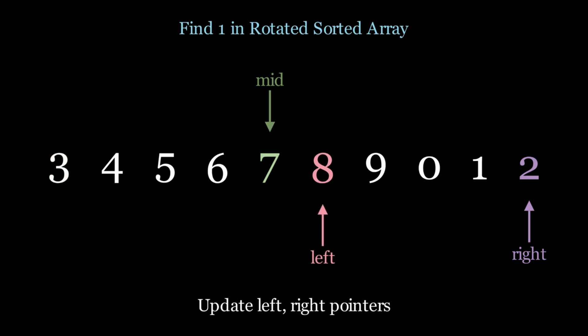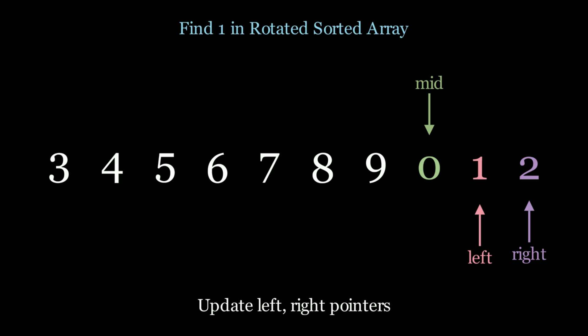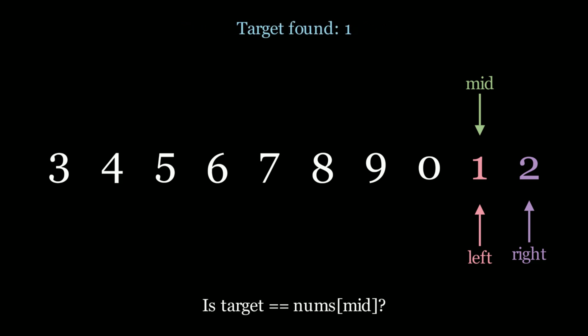We calculate a new mid pointer — in this case, 0. Is the target equal to 0? No. Is the left side sorted? No — this is the first case where the left side is not sorted: 8 is greater than 0, so the left value is greater than the mid value. That means the right portion is sorted. So we ask: is our target contained inside the right sorted interval? Is 1 contained in the interval 0 to 2? It is. So the right side is sorted and our target is within that range — let's move the left pointer and explore the right subarray. We calculate mid again and find the value is 1. We found the target and we're done. This was case 2.